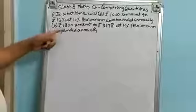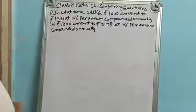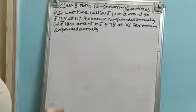Part B: Rs. 800 amount to Rs. 2178 at 10% per annum compounded annually.